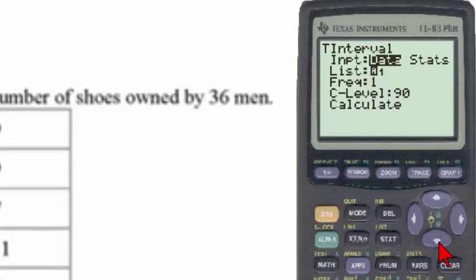Checking to make sure that the data is coming from list 1, and the frequency is 1. If the frequency is blank, you can't just click on the number 1 key, because there is the letter A inside the cursor, telling us we are in alpha mode.